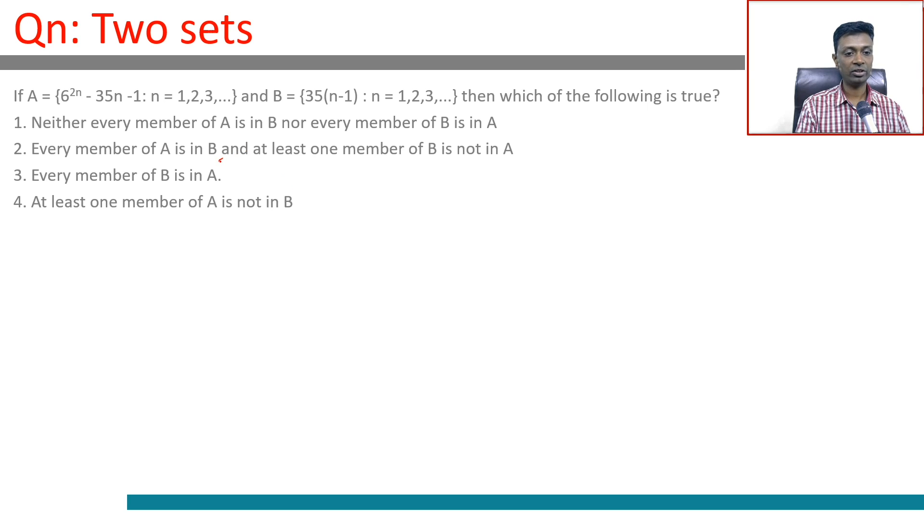This says A is a subset of B. Before we go further, I want to write down and see a few numbers. I want to put n=1, so 6^2 - 35 - 1, which is 0.